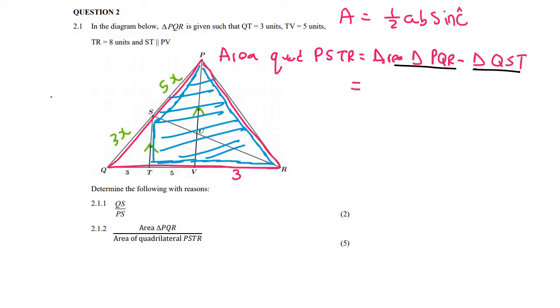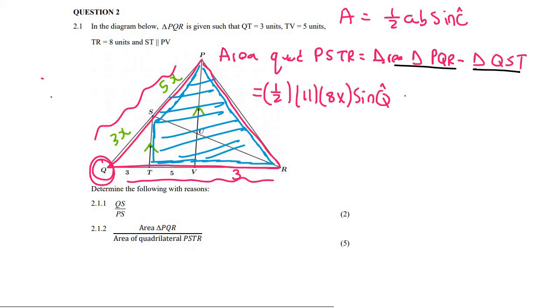So we can say that that's going to be equal to the area of PQR. So the formula that I'm going to use is area is equal to a half AB sin C. You know that formula. So it's going to be a half. Now, for PQR, and we're using this angle, you're going to take this length, which is 11. And then you're going to take this length, which is 8X. And then you're going to say sin of angle Q. And then you're going to say minus the area of this little triangle QST, which would be a half times by 3 times by 3X, and then also times by the sin of Q.